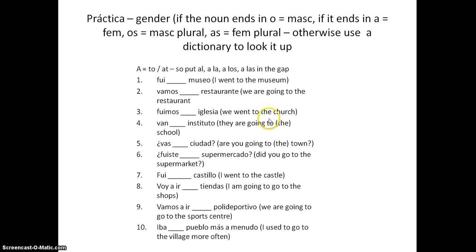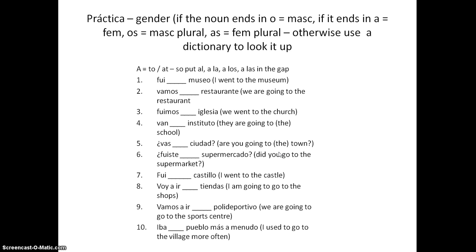We went to the church — TO THE — again, AL, ALA, ALOS, or ALAS. I've put the English in each case. Sometimes we might omit the THE in English: 'they are going to school' or 'they are going to THE school.' Okay, so pause it now, have a go, and when you're ready play it again to see the answers.